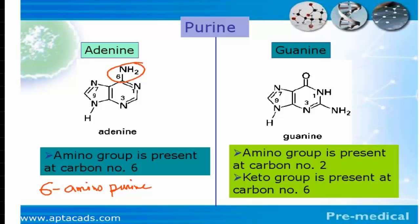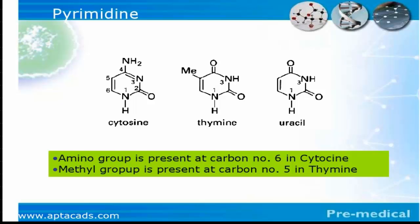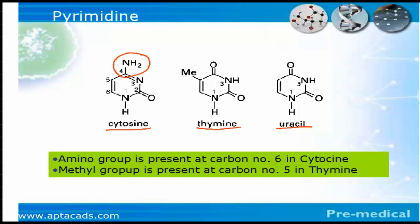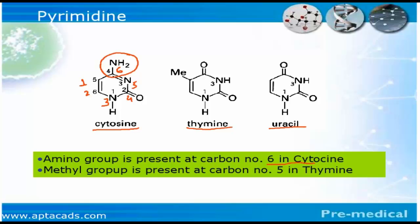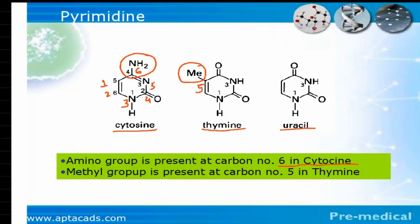In guanine, the amino group is present at carbon number two and a keto group is present at carbon number six. There are three types of pyrimidines: cytosine, thymine, and uracil. In cytosine, the amino group is present at carbon number four (modern nomenclature) or carbon number six (classical nomenclature). Thymine is special because a methyl group is present at carbon number five — making thymine a methylated nitrogenous base.